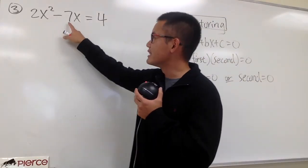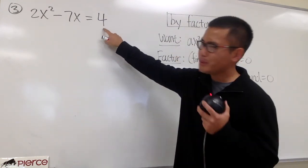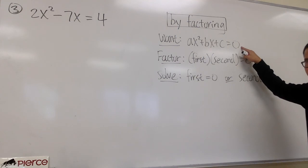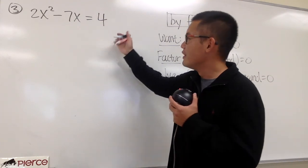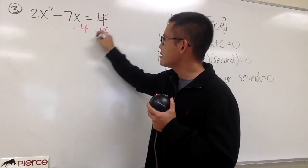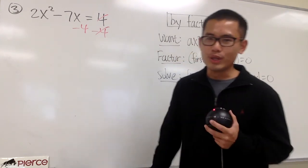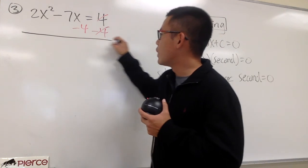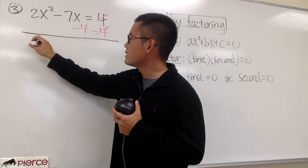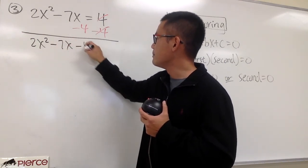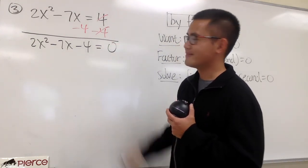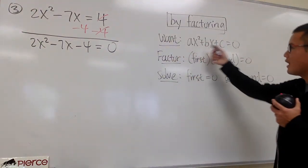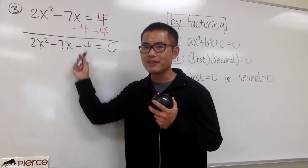Now let me show you the last example. We have 2x squared minus 7x equals 4. The right-hand side is 4, not zero — that's no good, because we need a zero on one side. So we subtract 4 from both sides: the right-hand side becomes zero, and the left-hand side becomes 2x squared minus 7x minus 4 equals zero. Now we have the standard form we want, and we can focus on factoring the left-hand side.